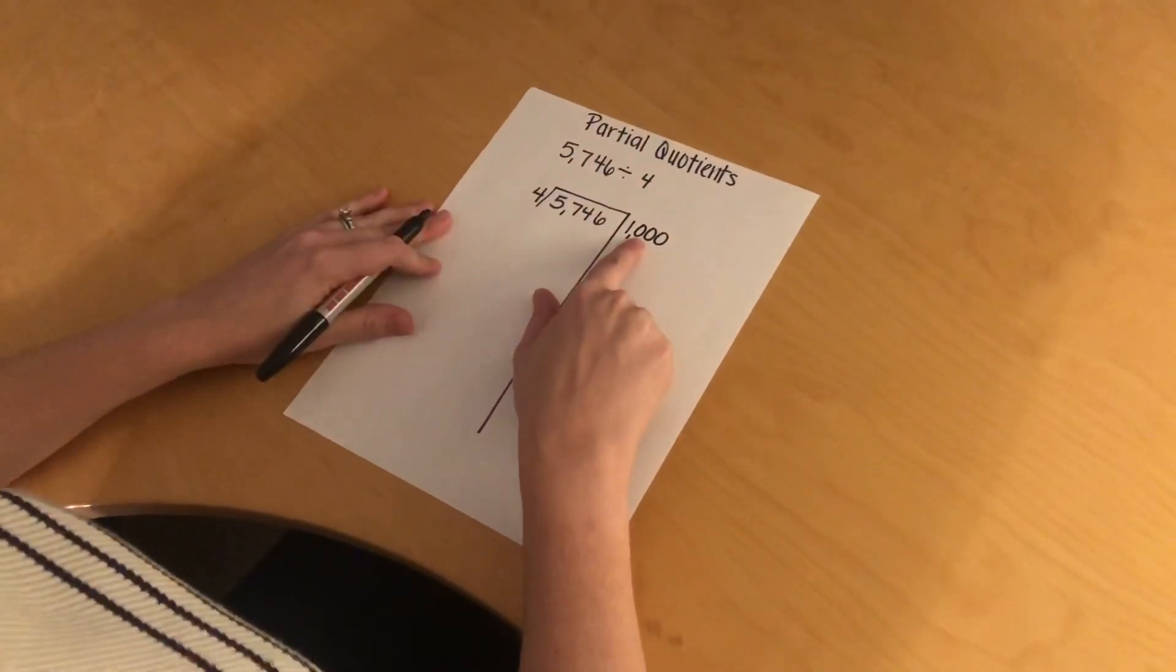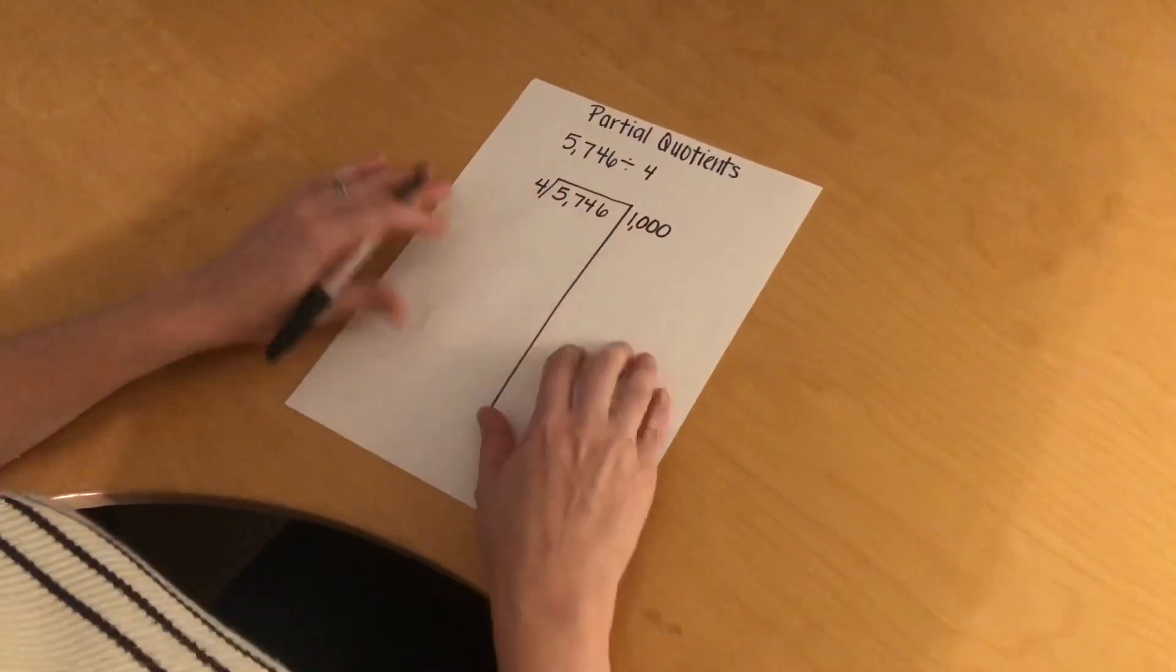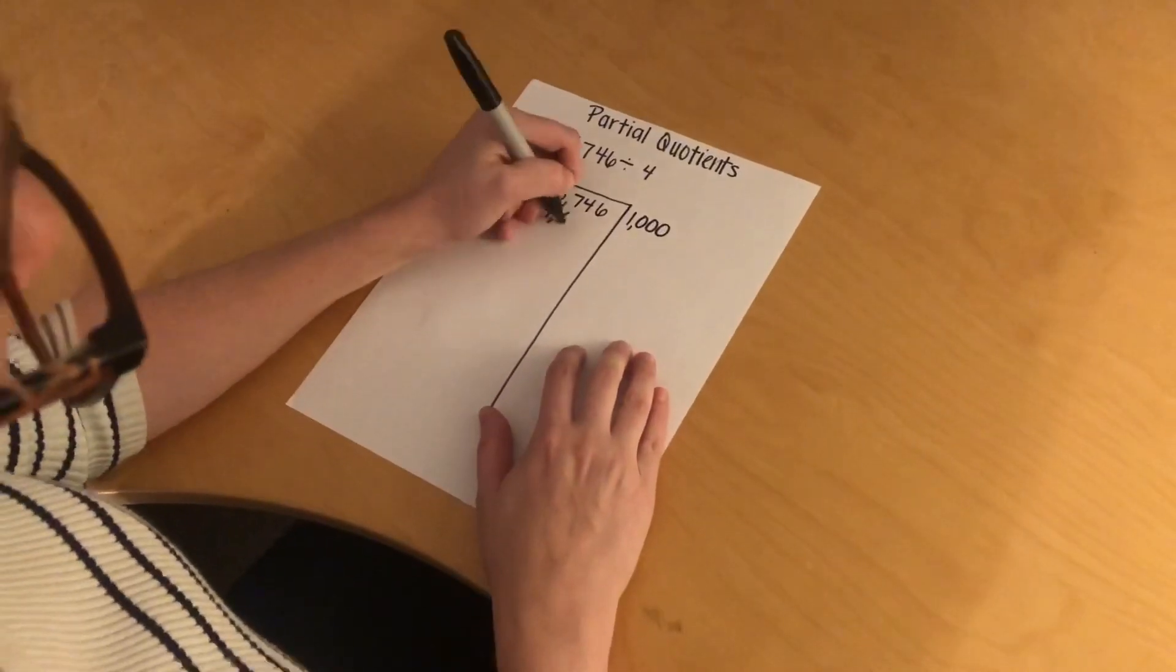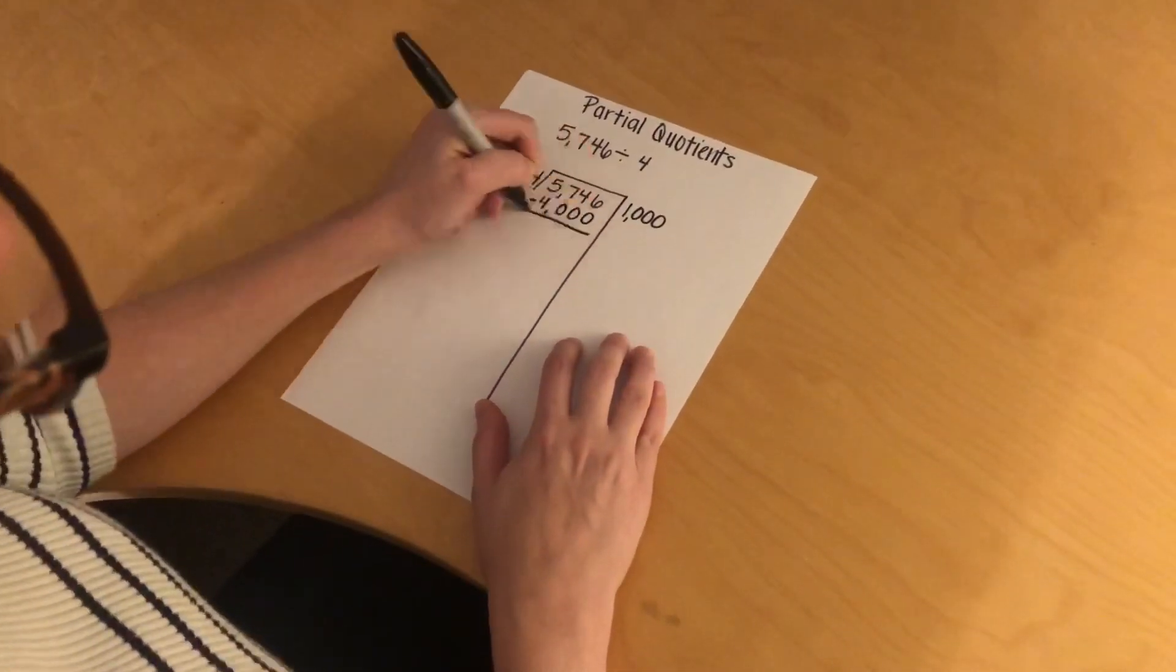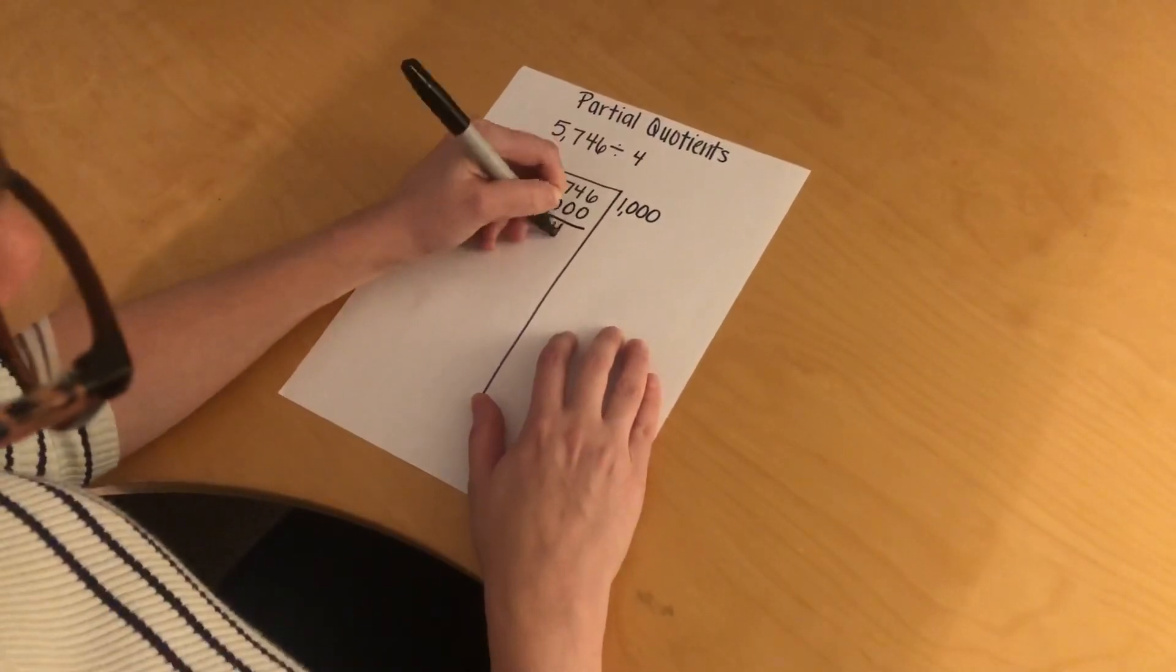Now I'm going to multiply this 1,000 times the 4, and I'm going to write that under here, and I subtract, and I get 1,746.